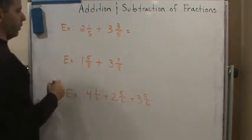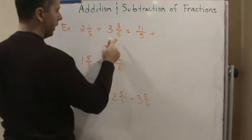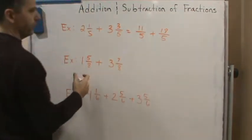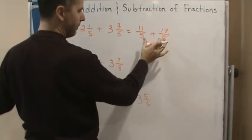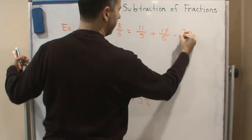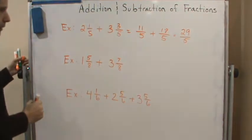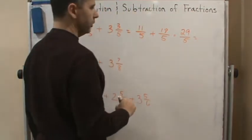So what do we get? We get 11/5 plus 18/5. Now we've got a common denominator, so we add across the top and keep the bottom. This gives us 29/5, and then we change this to a mixed number, which is going to be 5 and 4/5.